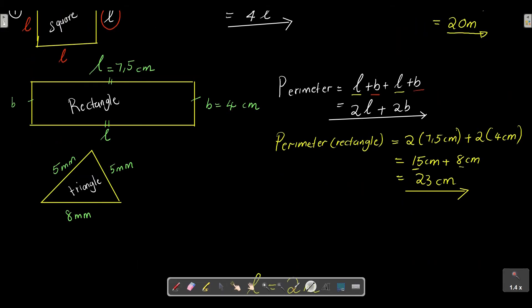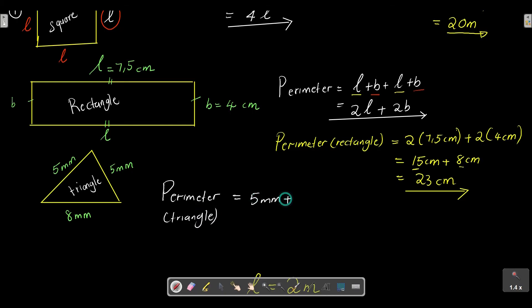Now let's calculate the perimeter of a triangle. To find the perimeter, we simply add up all the lengths of the sides. For a triangle with sides of 5 millimeters, 5 millimeters, and 8 millimeters: perimeter = 5 + 5 + 8 = 18 millimeters. The formula is simply side + side + side.